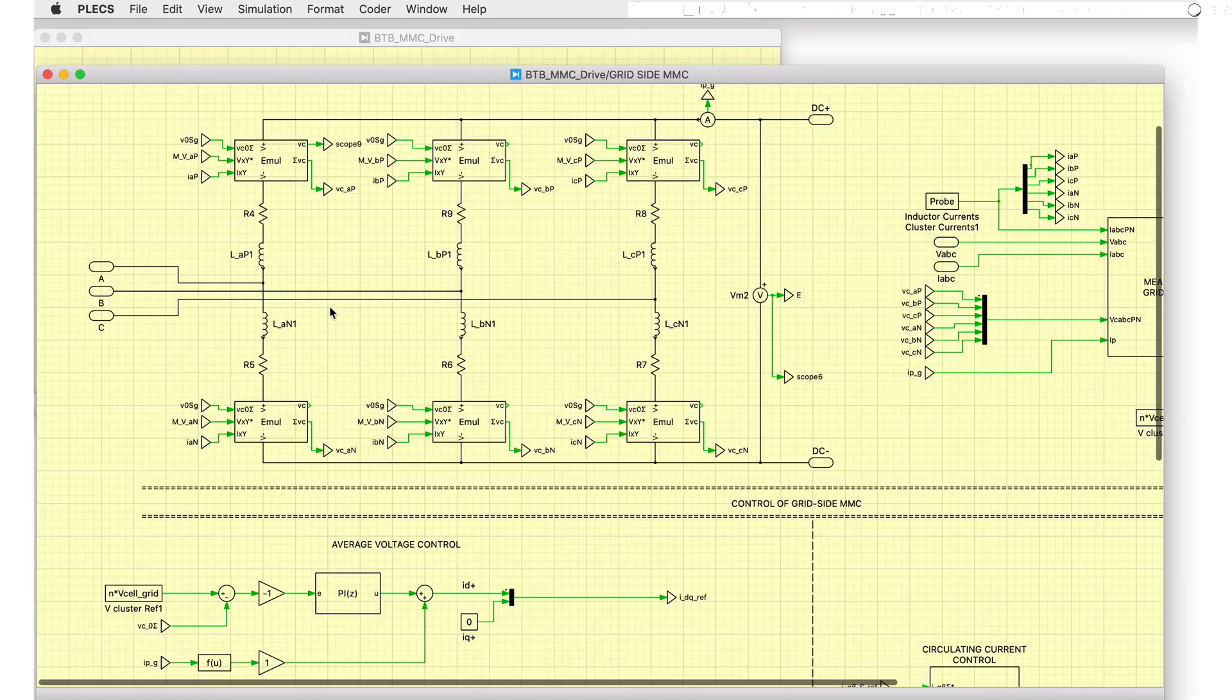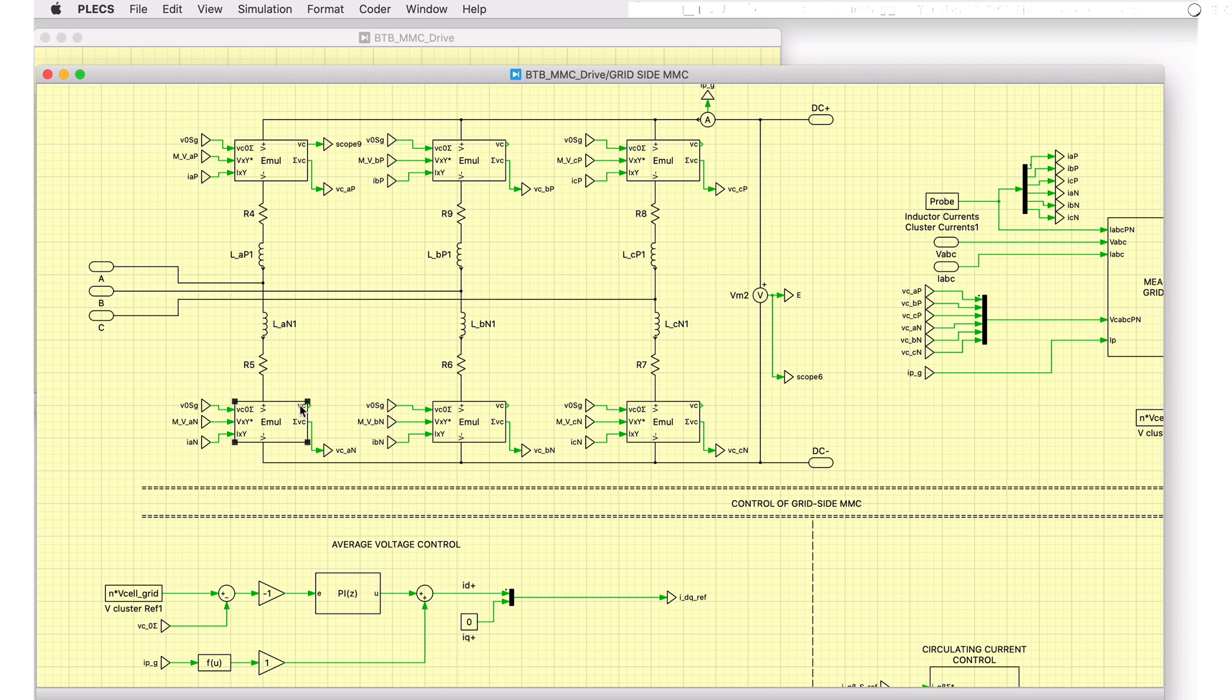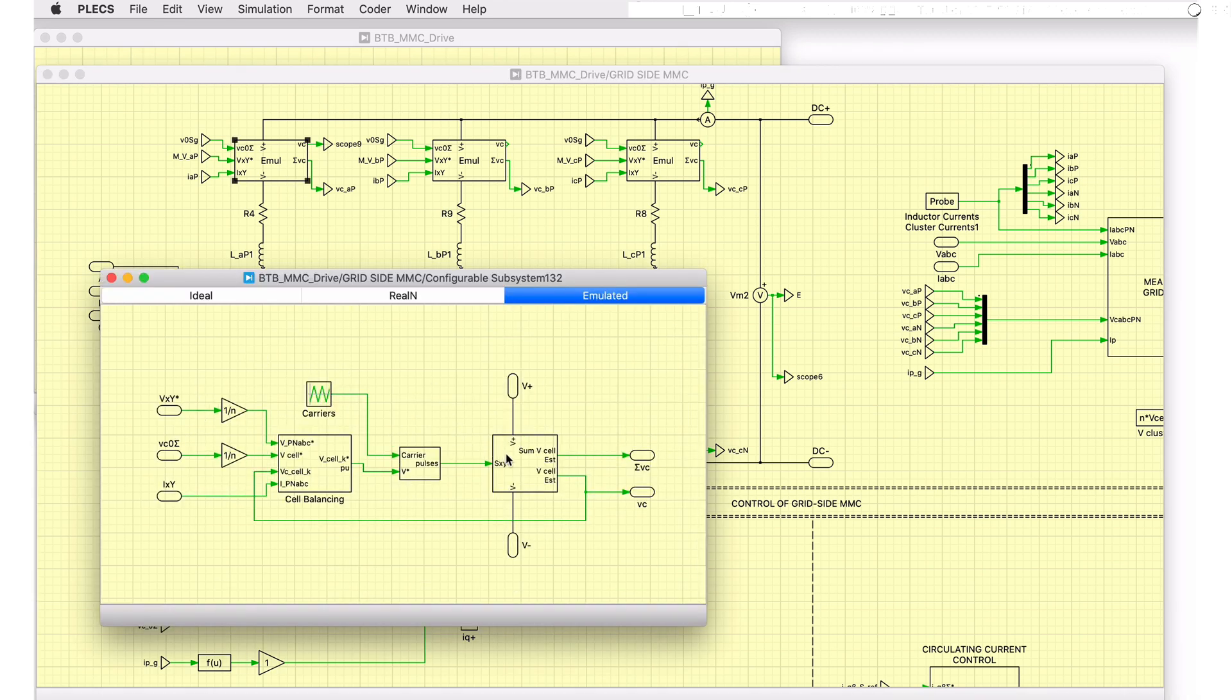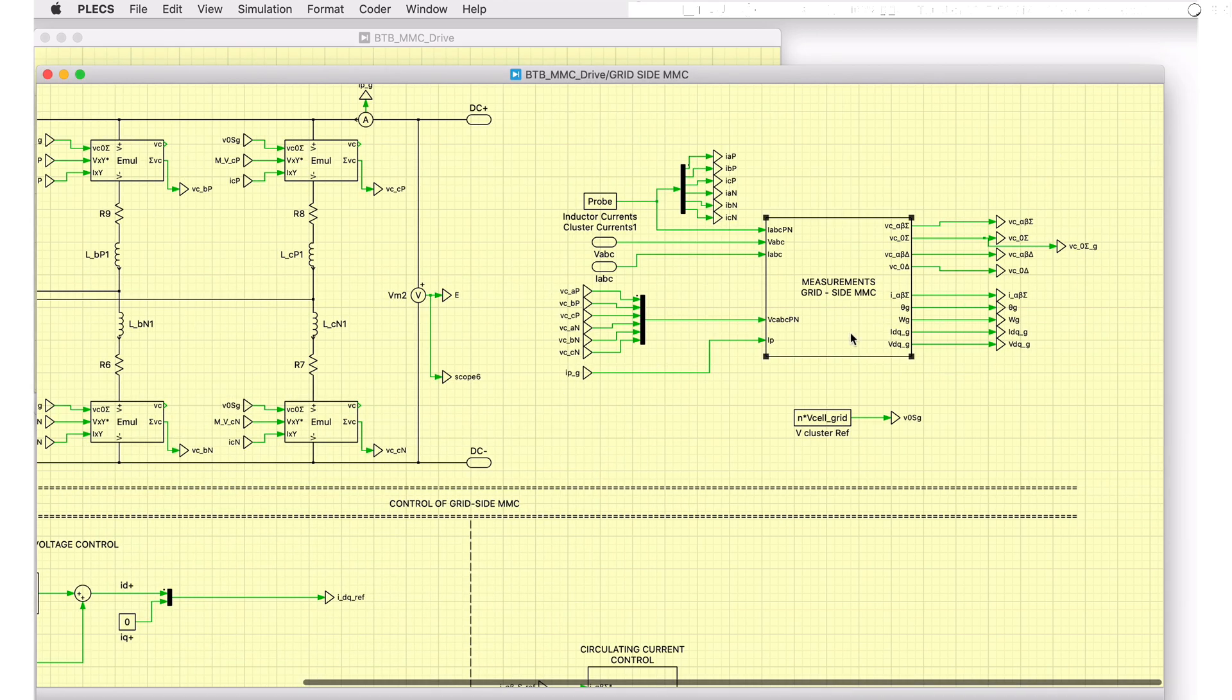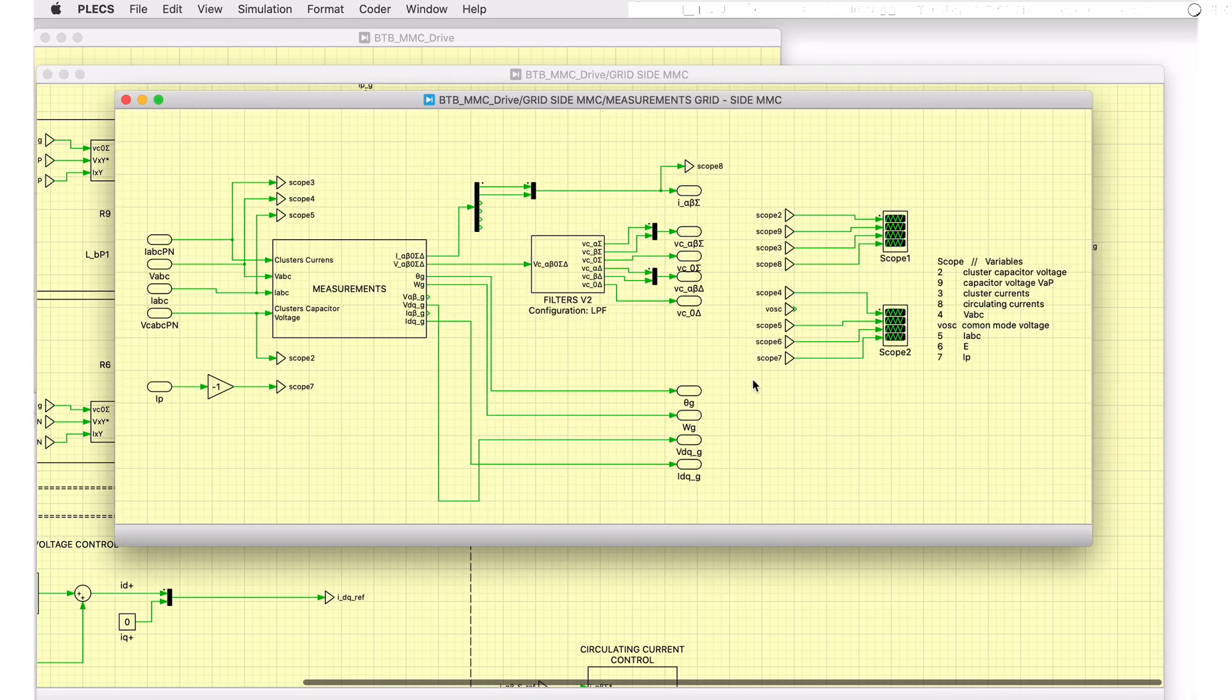Let's look under the subsystem of the grid-side MMC. The MMC has an upper and a lower cluster on each of the legs. Each cluster consists of a stack of N cells modeled as a controlled voltage source. This subsystem here captures all the measurements of the grid-side MMC.